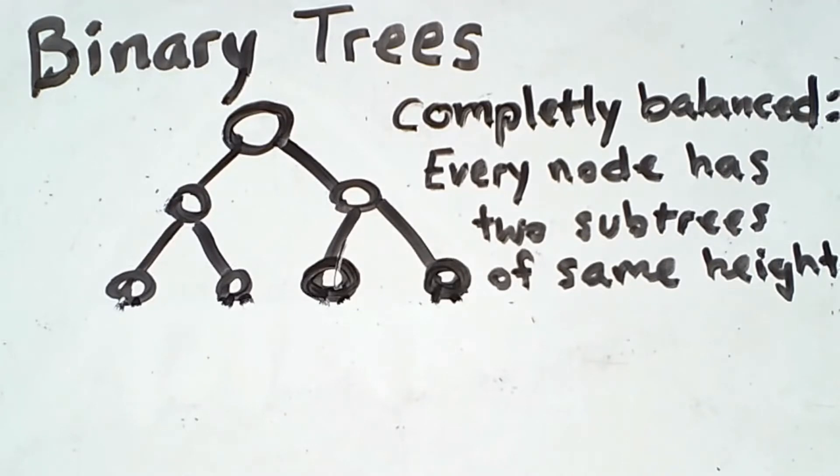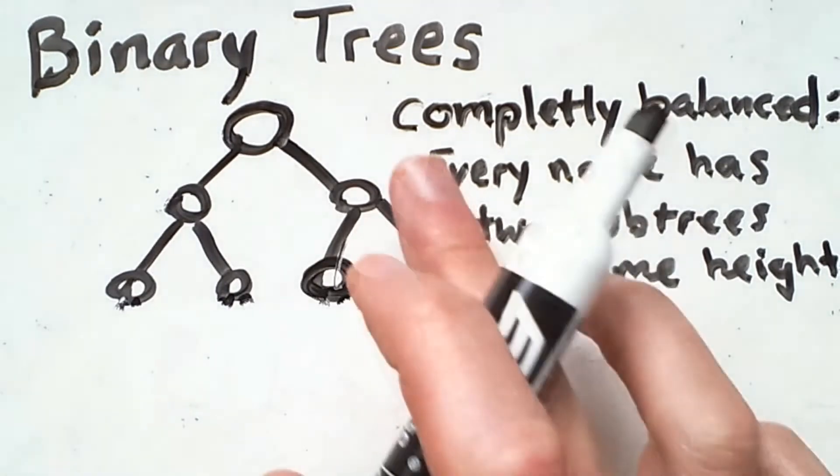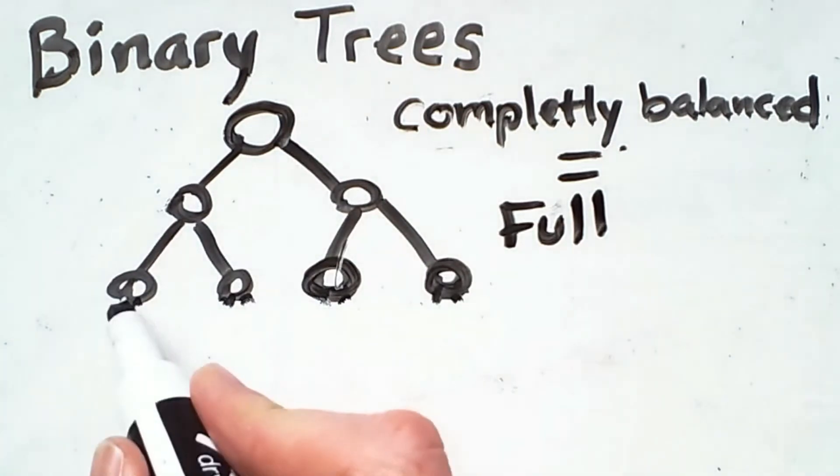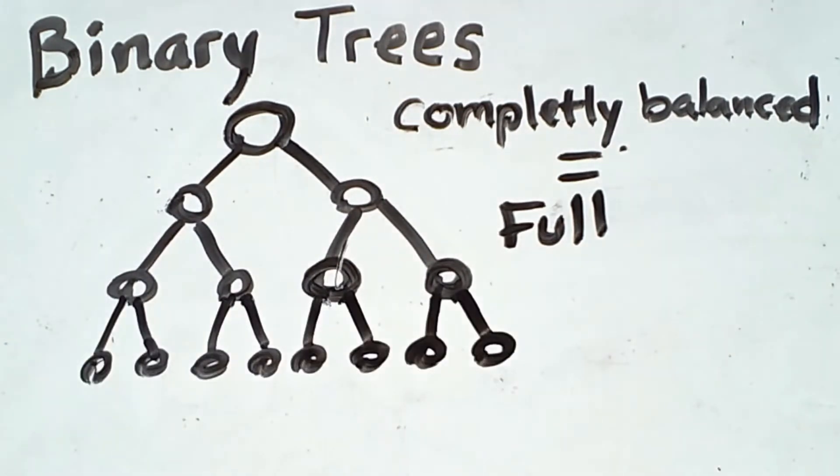However, the only types of trees that satisfy this definition are ones that are full. So for all intents and purposes, completely balanced is simply equivalent to full. So this is a completely balanced tree, it's also full. And this is a completely balanced tree, it is also full.